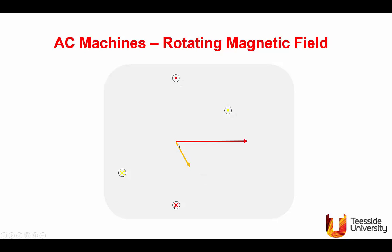Then we add a third coil — the blue coil. The blue coil has current in and current out, so applying the right-hand rule the flux due to this current will be in this direction. The current magnitude is the same as the yellow — half the red — giving this blue magnetic field. The resultant magnetic field due to this combination of three coils, displaced in space, is found by adding the red plus the yellow plus the blue, giving the resultant magnetic field.